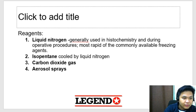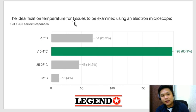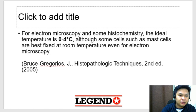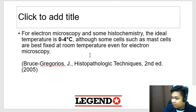Ideal fixation temperature for tissues to be examined using an electron microscope. Maraming nahuli dito — medyo marami ang sumagot ng negative 18. Yung negative 18, yan yung ginagamit na temperature for your cryostat. Kapag electron microscopy, dapat ang temperature would be 0 to 4 degrees Celsius. According to Bruce Gregorius, for electron microscopy and some histochemistry, ideal temperature is 0 to 4 degrees Celsius.